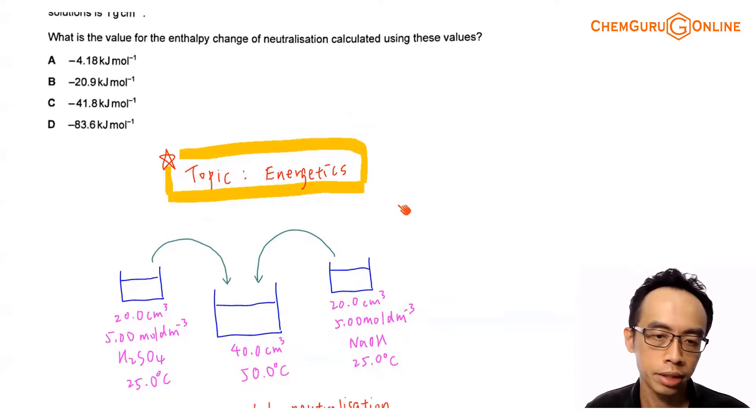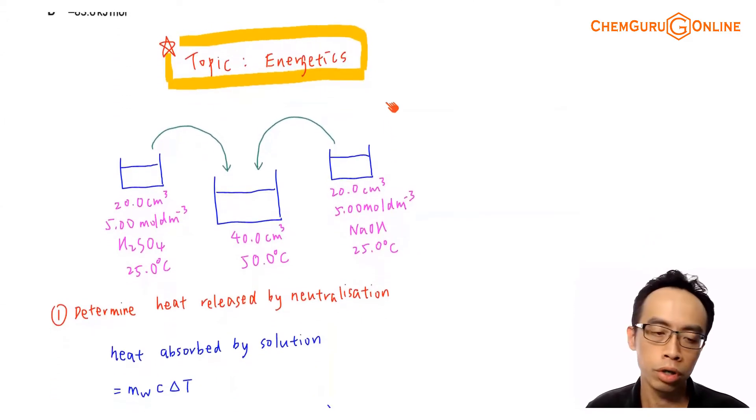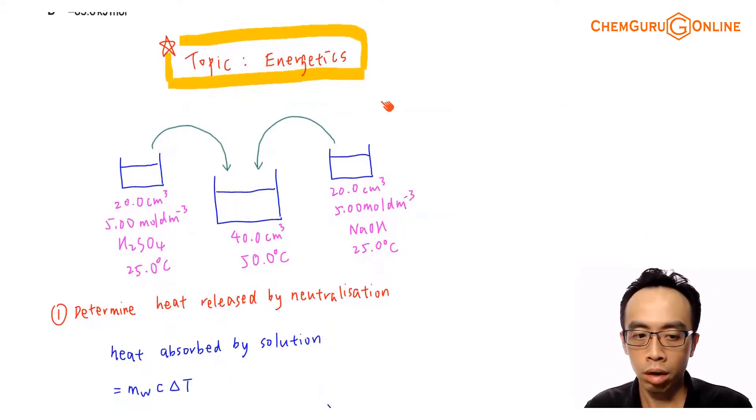Maybe let us take a look at the process and understand what is going on here. Now the concentration and volume for H2SO4 is given 20.0 cm³. Concentration for H2SO4 is 5.00 mol per dm³. And I'm mixing this with equal volume, that means another 20 cm³ of sodium hydroxide at the same concentration.